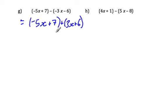3x plus 6. So now we've changed the subtraction question into an addition question, but we've had to change everything in the second bracket to the opposite sign. So we can drop the brackets. This is negative 5x plus 7 plus 3x plus 6.